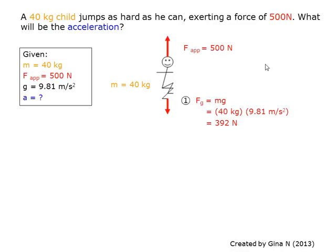Here the two forces acting are shown in red. The applied force equals 500 N as given in the question, and the gravitational force equals 392 N, which can be calculated by using the formula Fg equals mg.